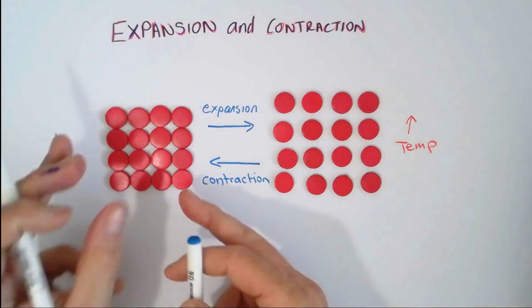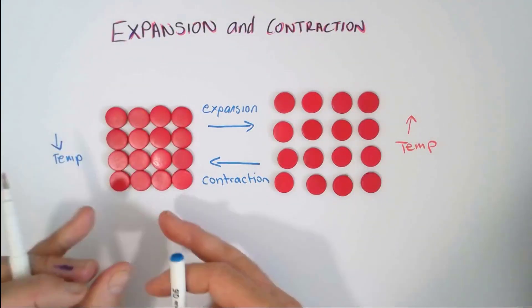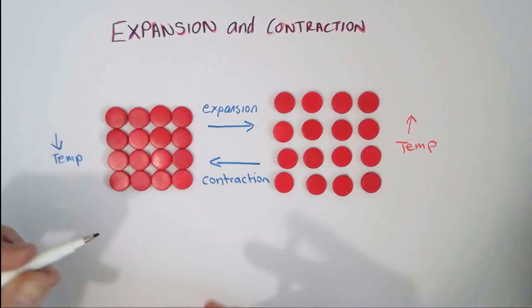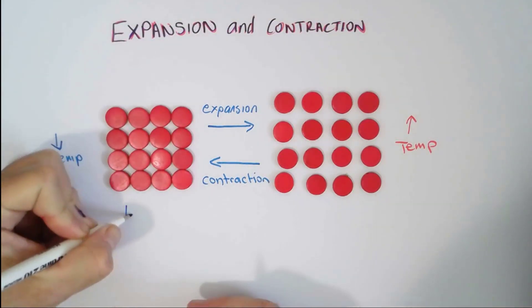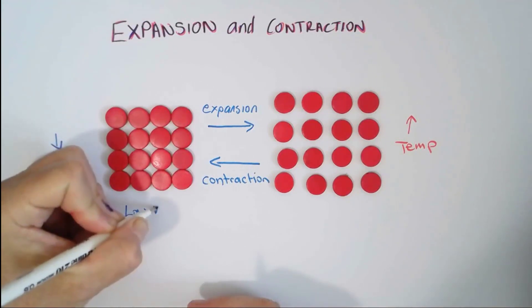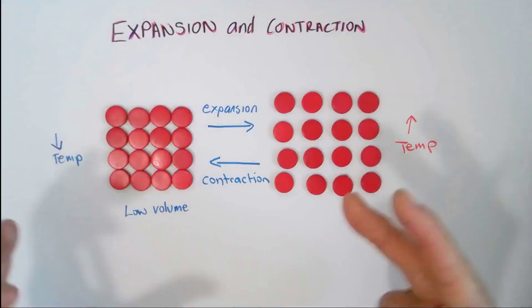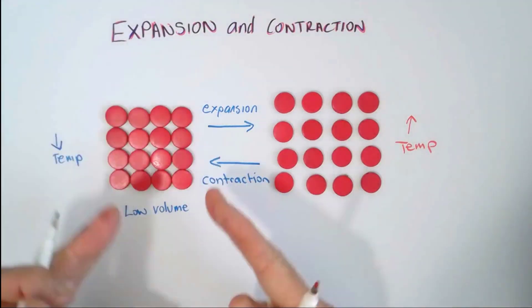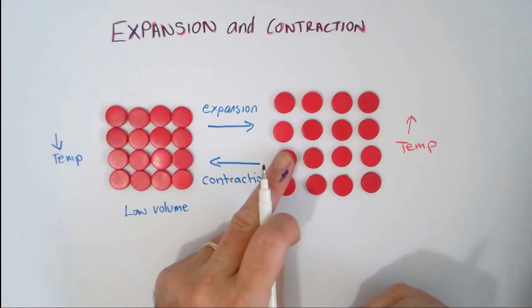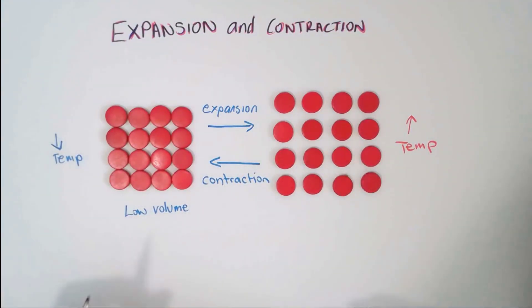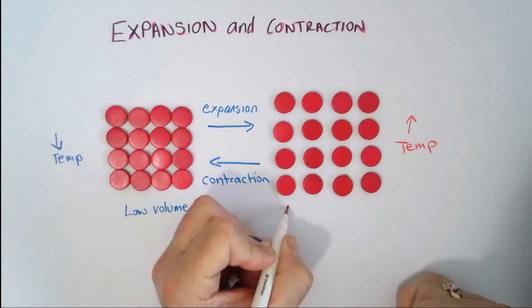And so what we can say in this state where it's cool and it takes up less room, we can say it's got a low volume. Now, volume of course is a measure of its 3D space, and I've only got a representation here in one dimension, but imagine it's 3D. So, when it's at low temperature, the volume is smaller, it's contracted, and when it's expanded, it's got a high volume.